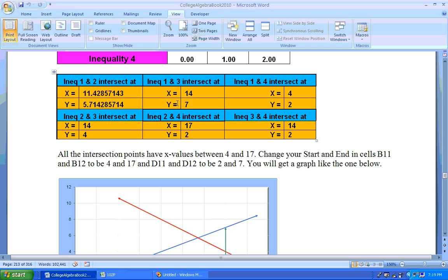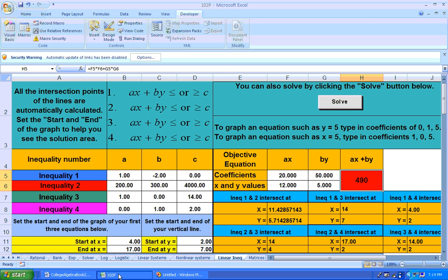looking at how low your Xs go, they are as low as about 4, up to as high as maybe 14 or so. So maybe start your Xs from 4 to 14, and your Ys go as low as maybe 2, up to about 7. So I've already put those in there.